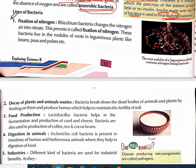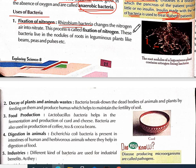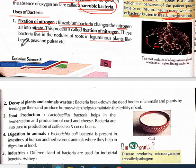What are the other uses of bacteria? First: fixation of nitrogen. The rhizobium bacteria, which we studied in previous chapters, are present in the soil and convert nitrogen to nitrate. This process is called fixation of nitrogen. These bacteria live in the nodules of roots in leguminous plants like beans, peas, and pulses.